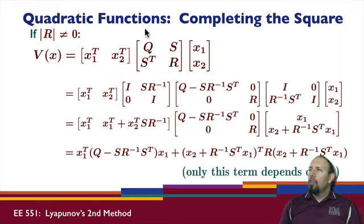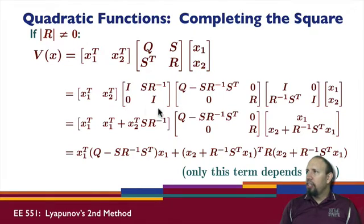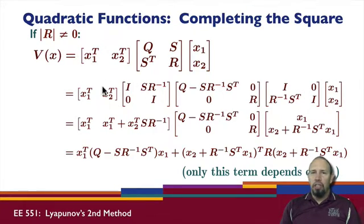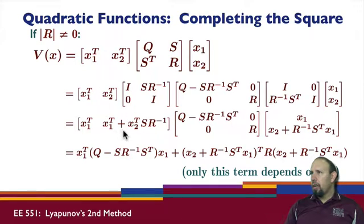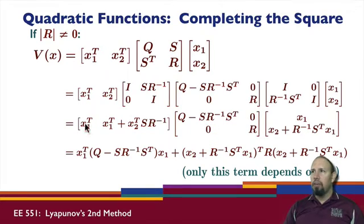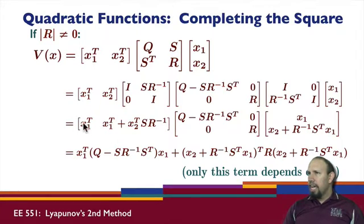For quadratic functions with partitioned matrices, if R is non-zero we can apply the factorization. Multiplying the factors together, and noting that the zeros in the factorization eliminate cross terms between x_1 and x_2, the overall product reduces to the Schur complement term depending only on x_1, plus a term involving R times a quantity that is the transpose of the other.